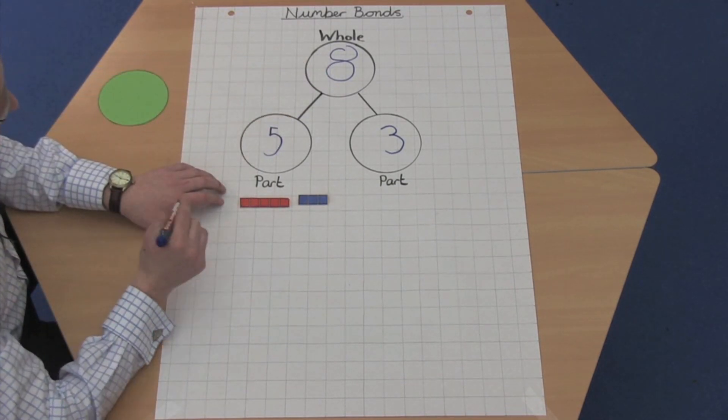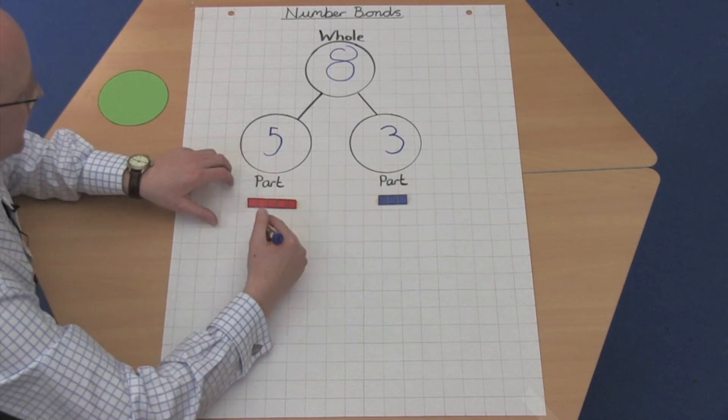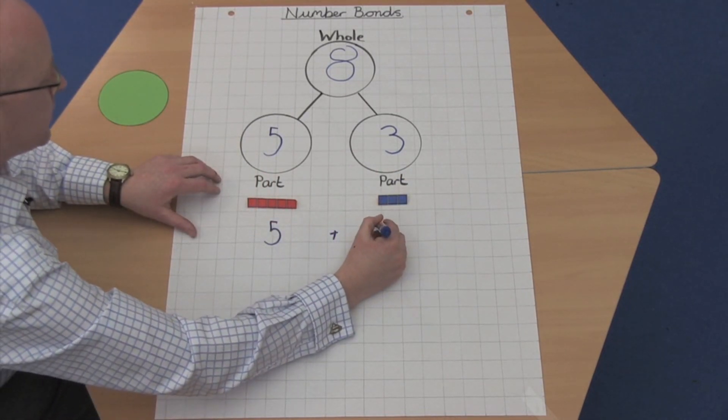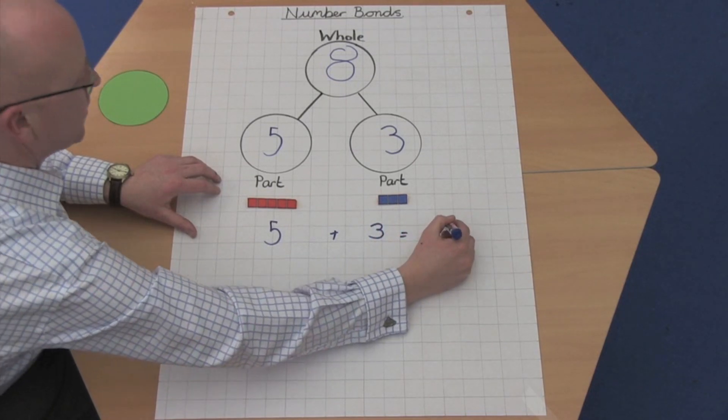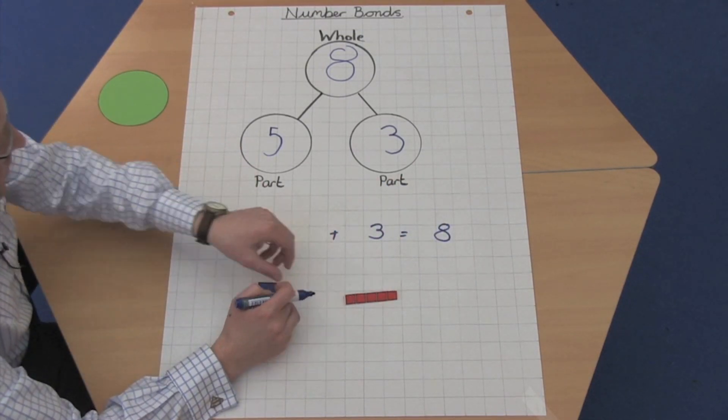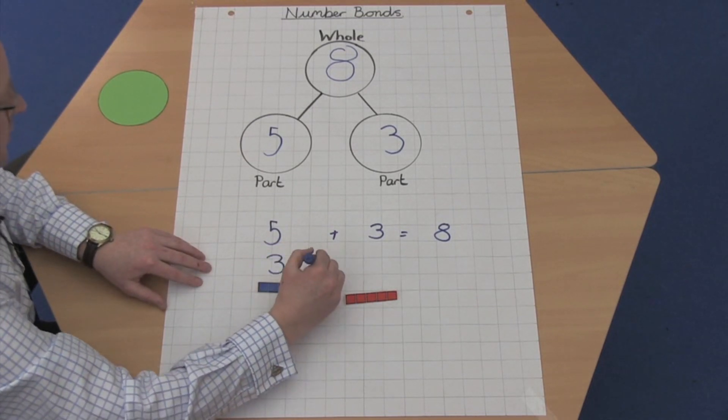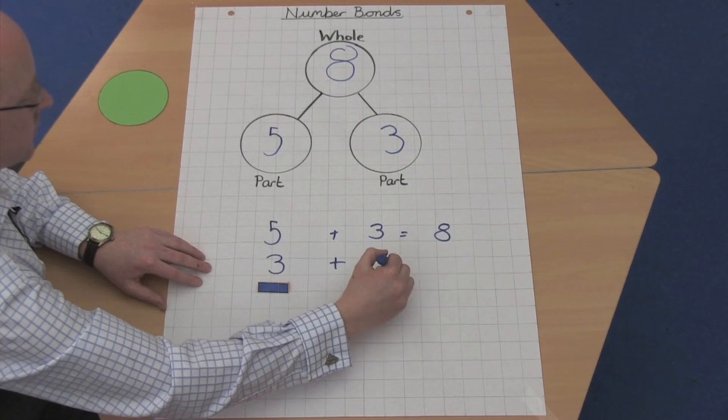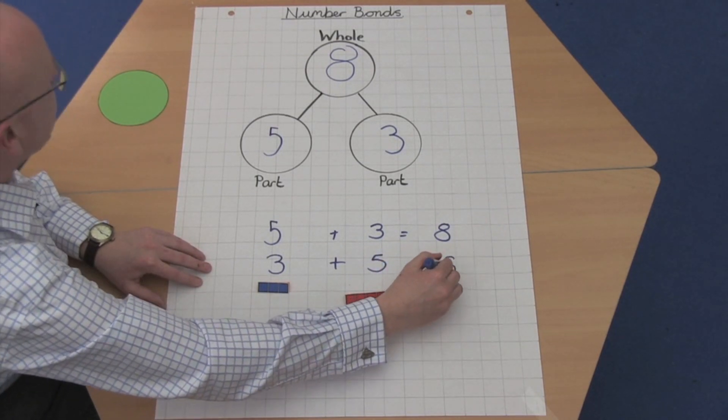From these numbers we can make a number sentence. So we start with our first one. Five plus the three equals eight. And then we can do it the other way around. We can start with the three plus the five equals the eight.